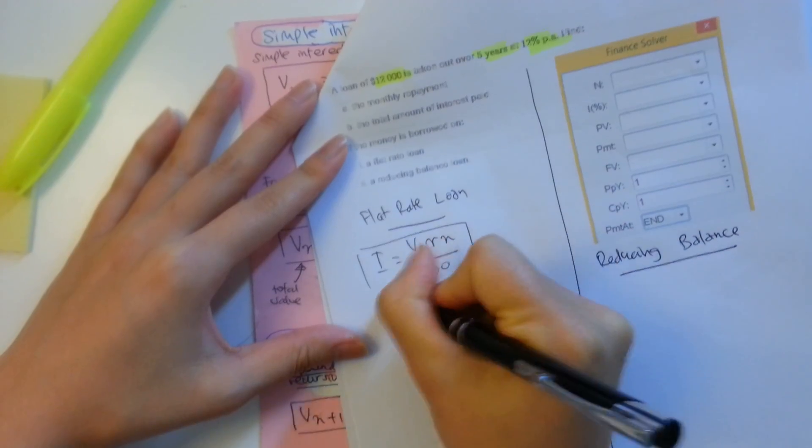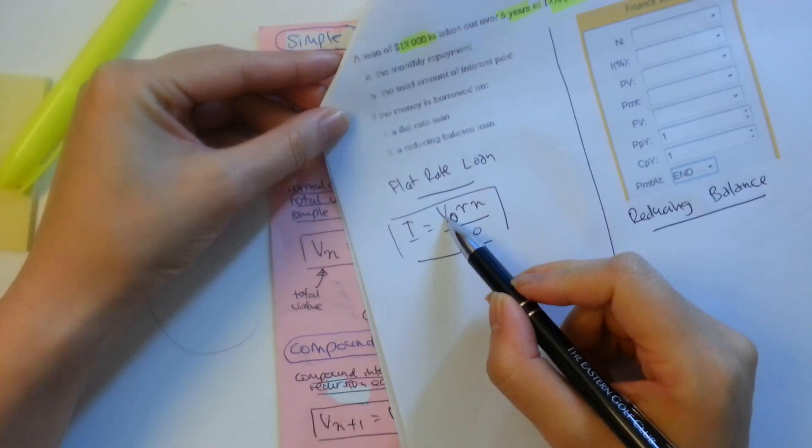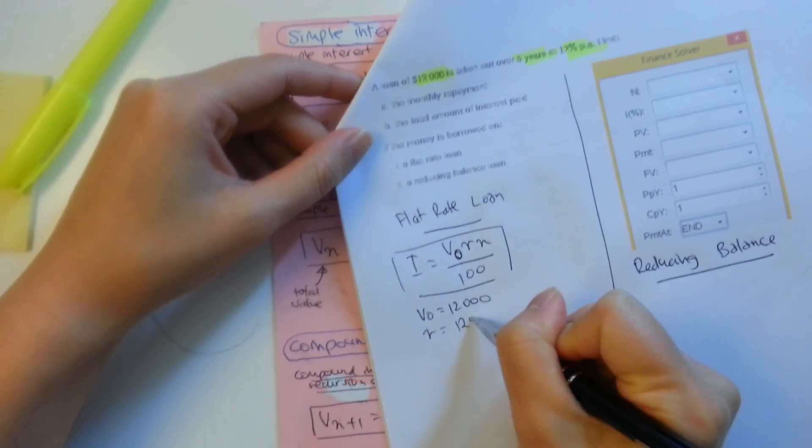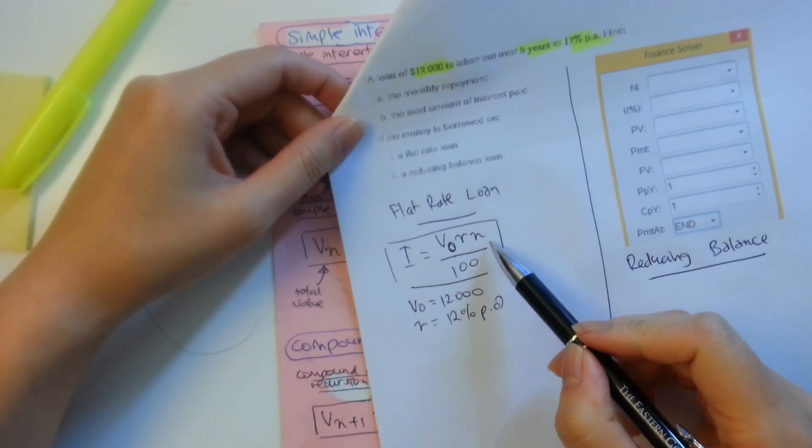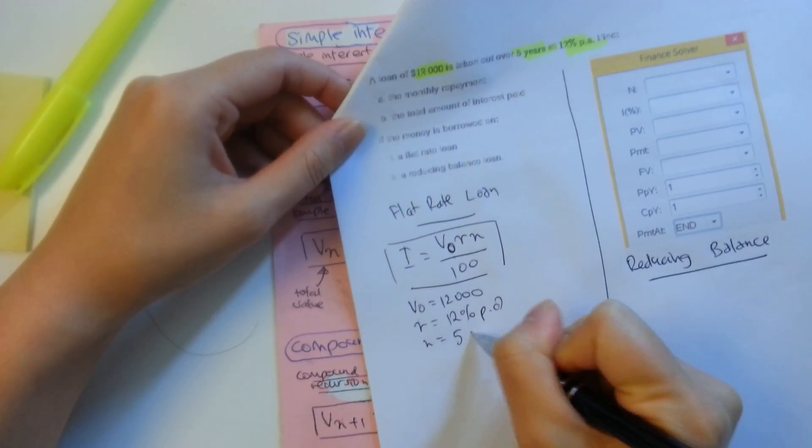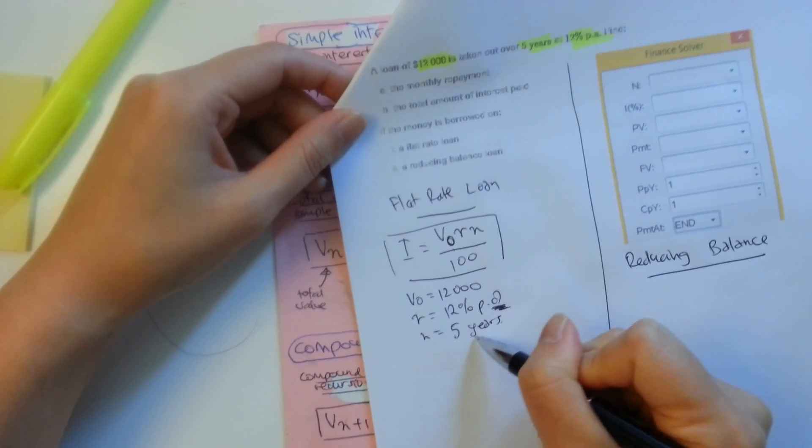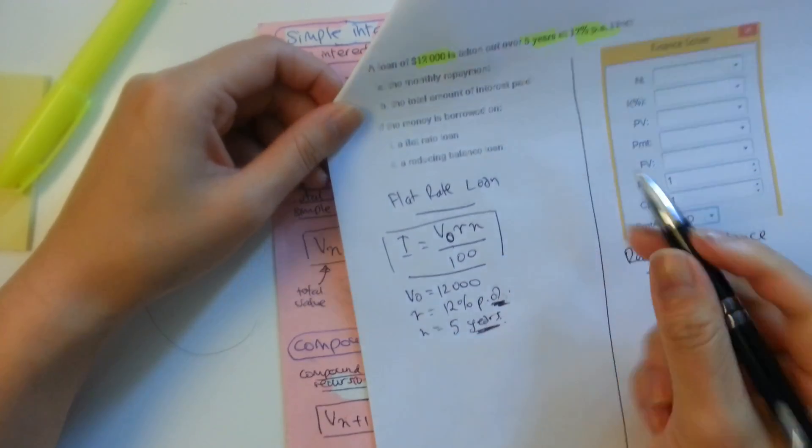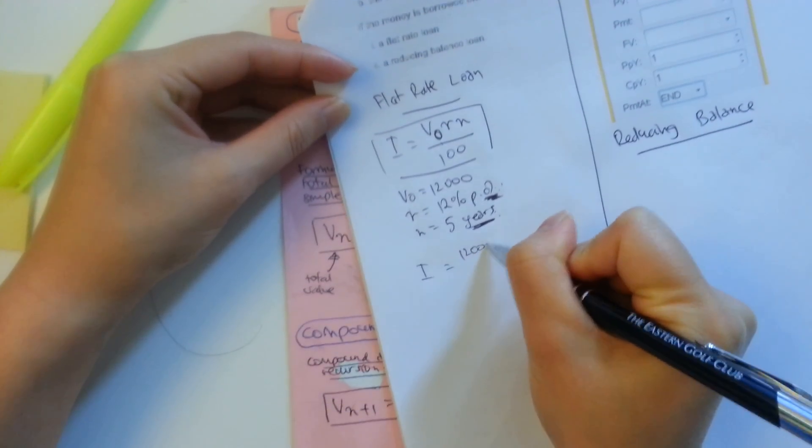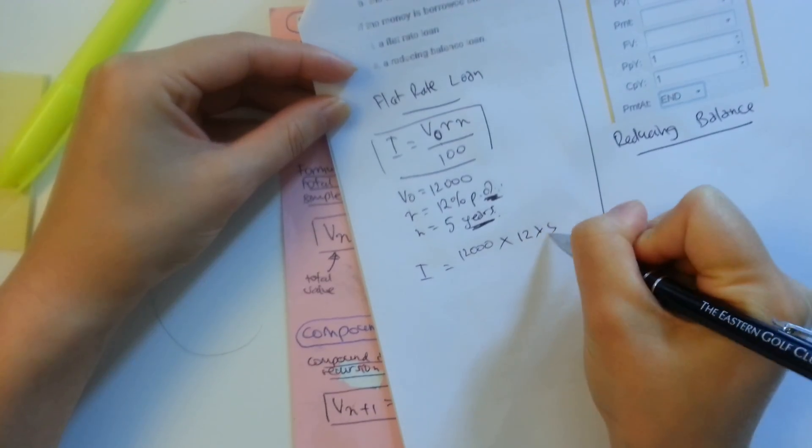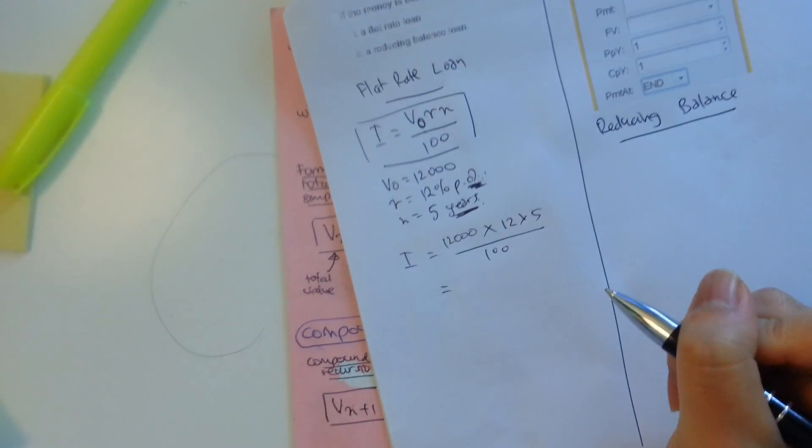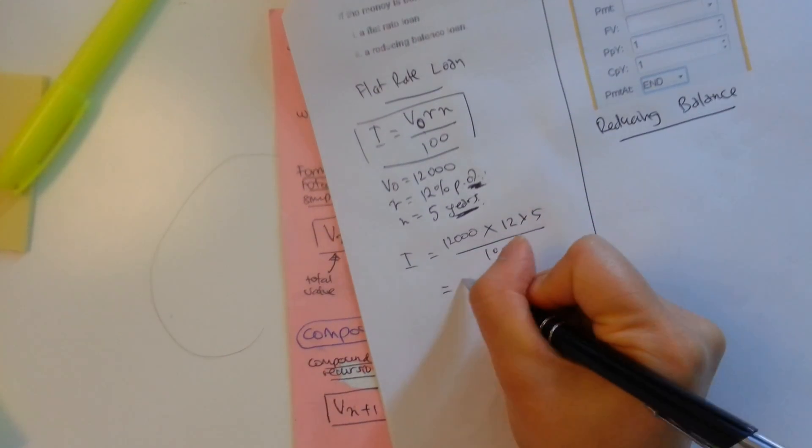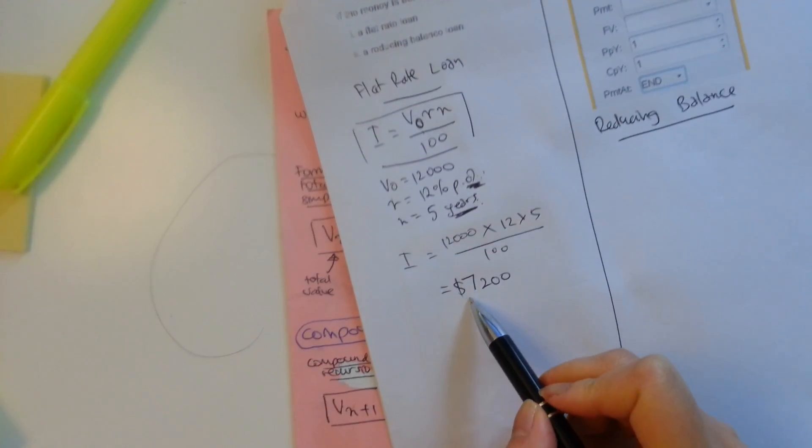Now let's find, let's put in all the information that we have. So our V0, our initial value is $12,000. Our rate is 12% per annum. And our N is five years. Now this is good because this is per annum. So it's yearly and this is also a yearly figure. As long as R and N are in the same kind of units, then we can just pop it all into the formula. So in it goes. I equals 12,000 times 0.12 times 5. Obviously, you'll be using your calculator to calculate this.